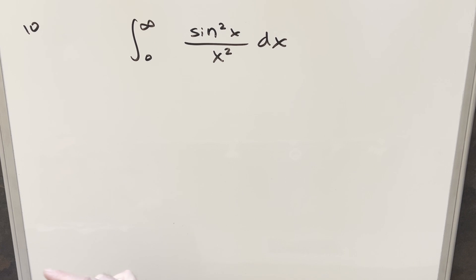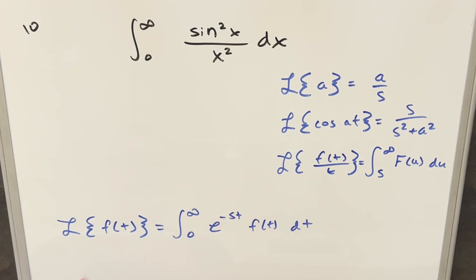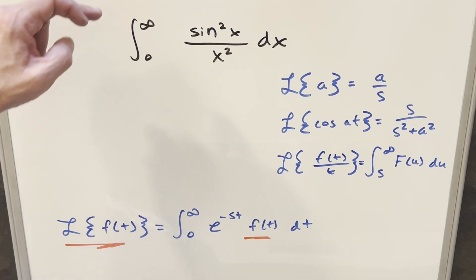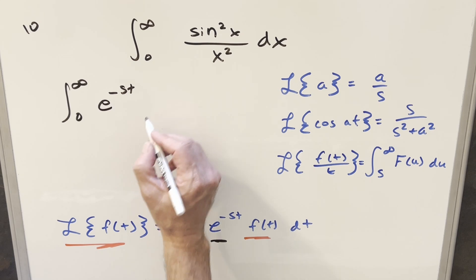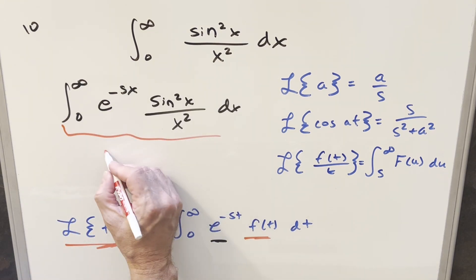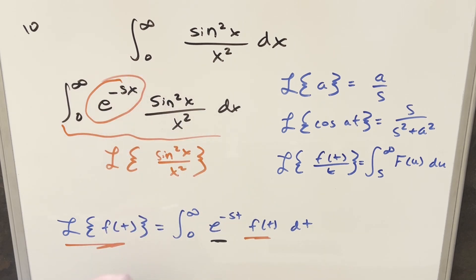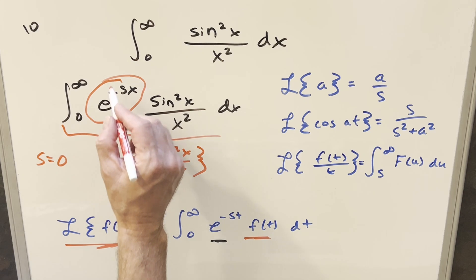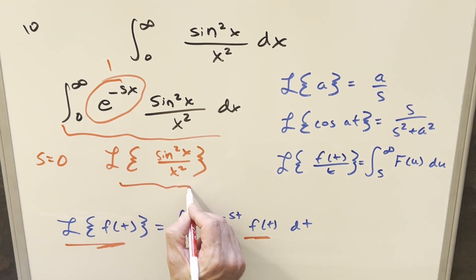To do this using Laplace transforms, we're going to need a couple of formulas and a little bit of background. The definition of the Laplace transform is: if we have the Laplace transform of some function f(t), we define it as the integral from 0 to infinity of e^(-st) f(t). What I'm going to do is create this e^(-st) part for this integral. If we rewrite it with e^(-st) multiplied in, this is going to be the same as the Laplace transform of sin²x / x², as long as we set s equal to 0, so the term becomes 1 and we haven't changed it.